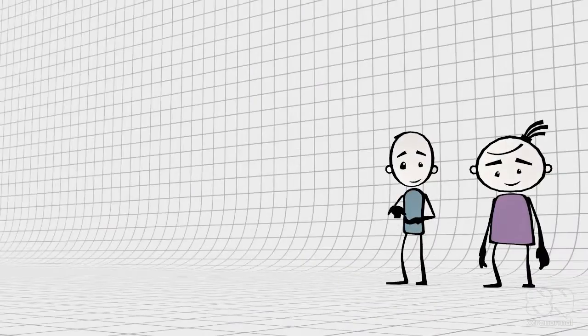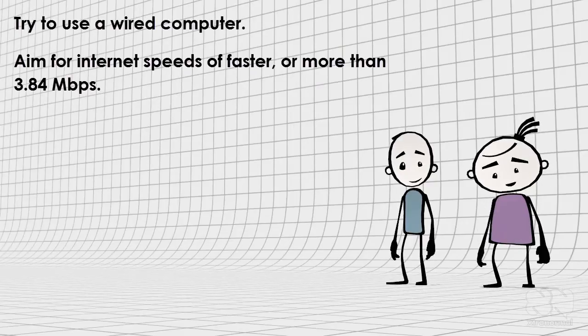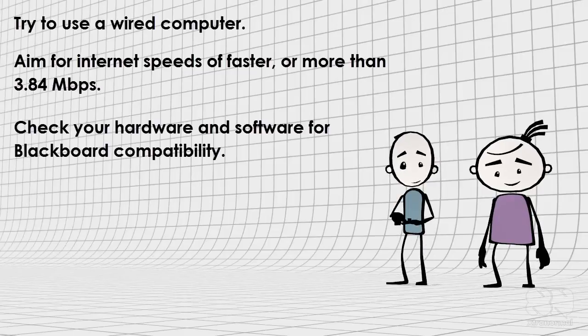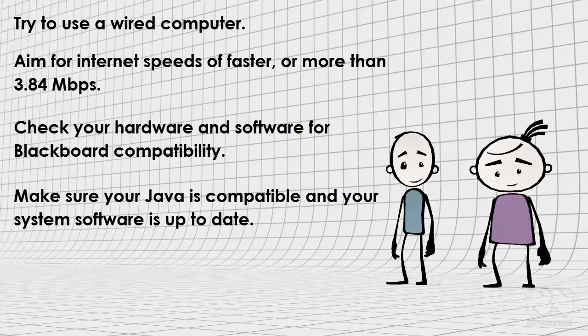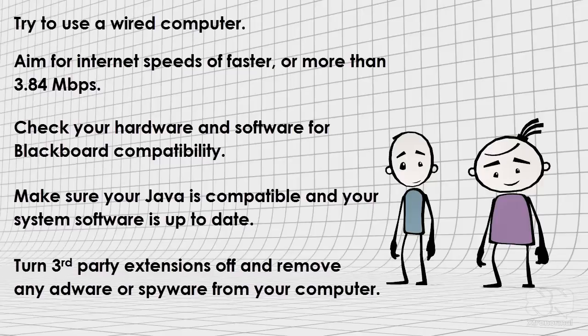In summary, do try to use a wired computer. Aim for internet speeds of faster or more than 3.84 megabit per second. Check your hardware and software for blackboard compatibility. Make sure your Java is compatible and your system software is up to date. Turn third-party extensions off and remove any adware or spyware from your computer.